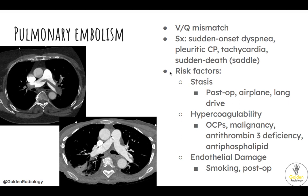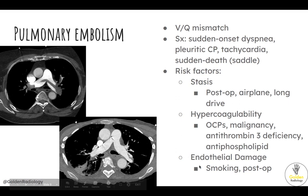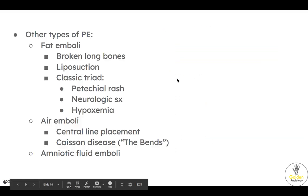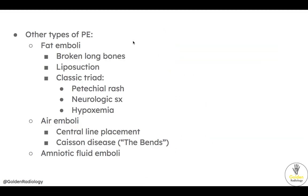Risk factors are essentially Virchow's triad: stasis (such as post-op state, long airplane ride, or long car ride), hypercoagulability (such as being on OCPs, malignancy, antithrombin 3 deficiency, or antiphospholipid syndrome), and endothelial damage (such as smoking or post-operative state). Other types of pulmonary embolism include fat emboli, which can occur in the setting of broken long bones — particularly broken femurs — as well as liposuction. The classic triad includes a petechial rash, neurologic symptoms due to emboli to the brain, and hypoxemia.